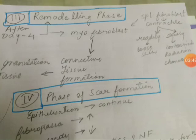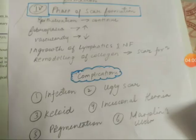The last phase is the phase of scar formation. Epithelialization will continue, fibroplasia will increase, then vascularity will increase, and lymphatics will increase, followed by remodeling of collagen — which is scar formation. Then vascularity decreases, while lymphatics and collagen increase.